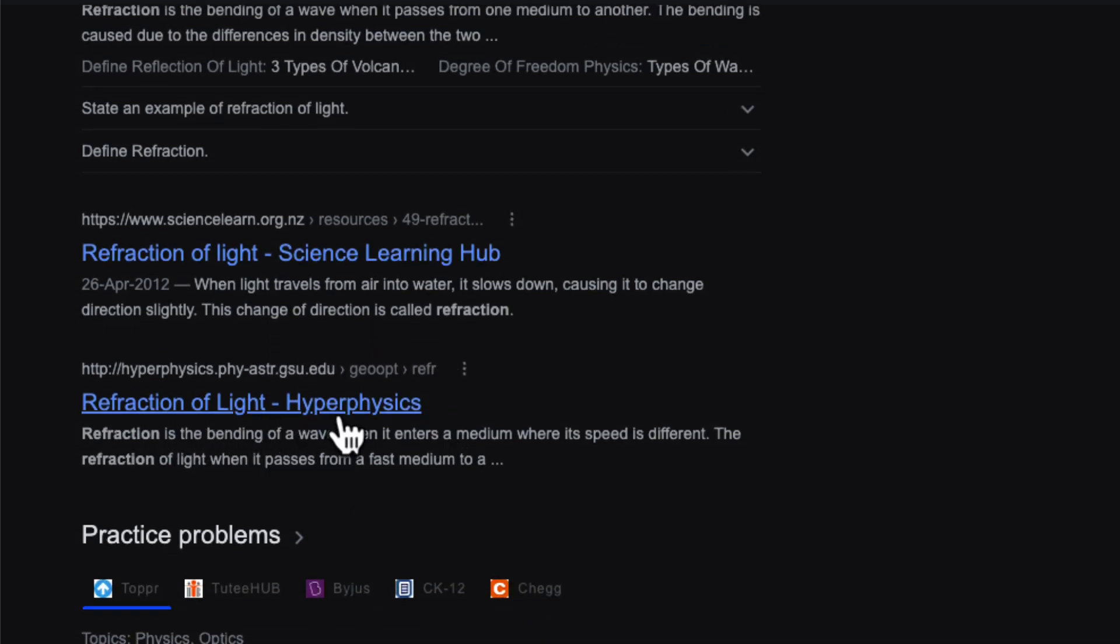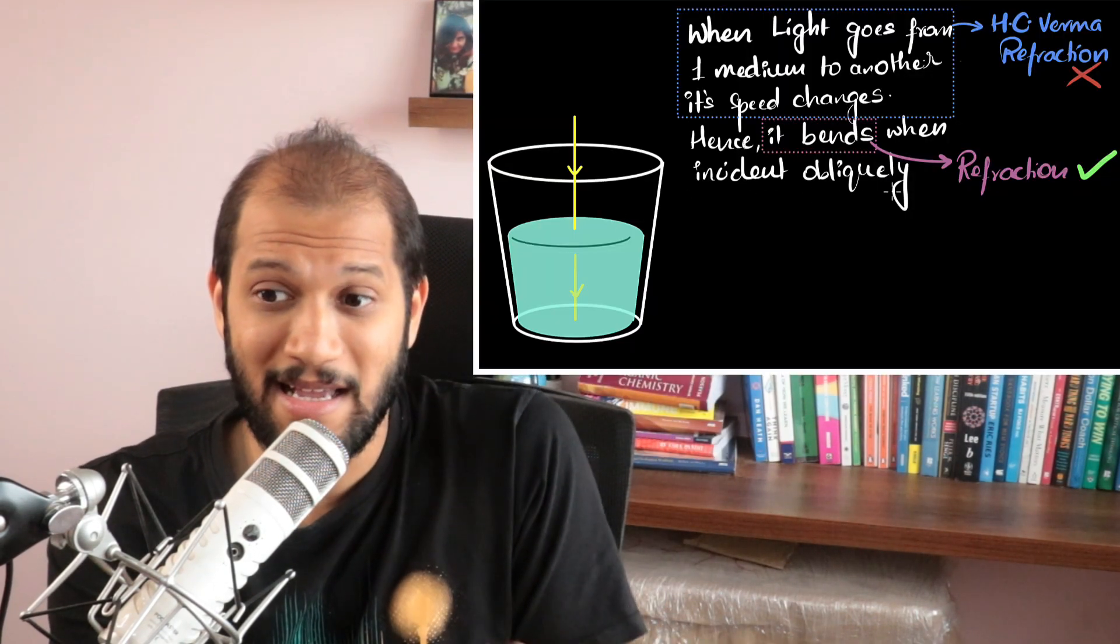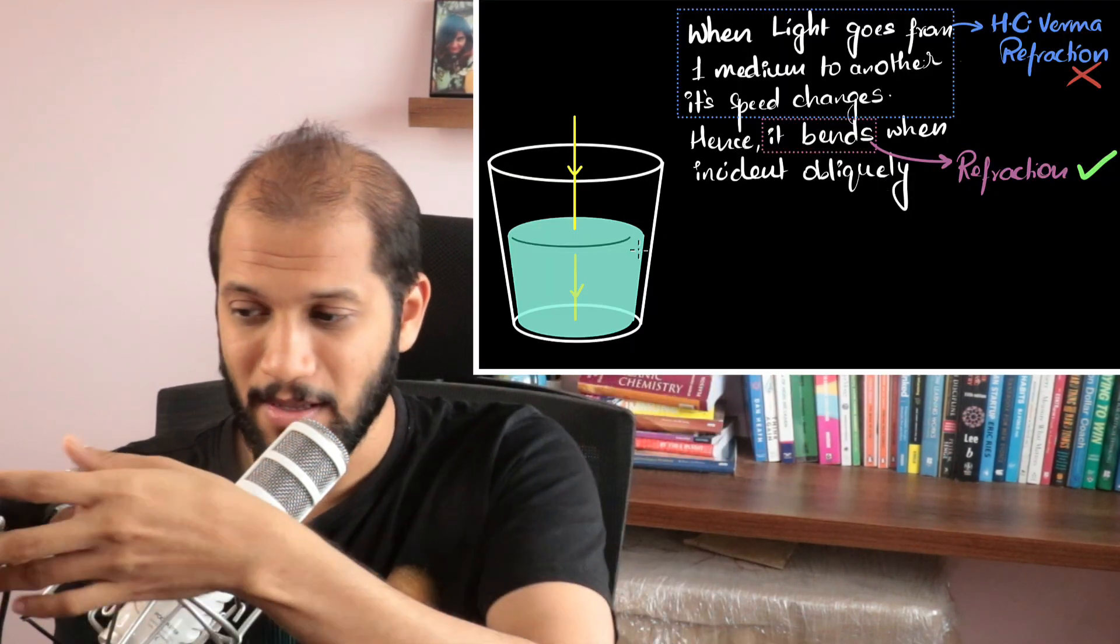Refraction is bending of light by Hyperphysics. It's a pretty popular, very good source of physics. It's a bending of wave. So you can see almost all the sources are talking about refraction as bending of light, which is what I said as well. And so from this definition, when it comes to normal incidence, it's not bending. And so there is no refraction happening.